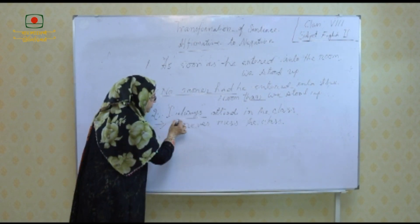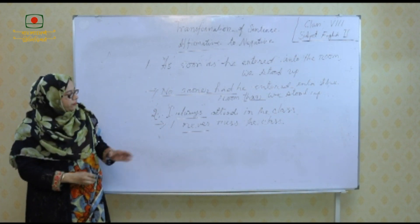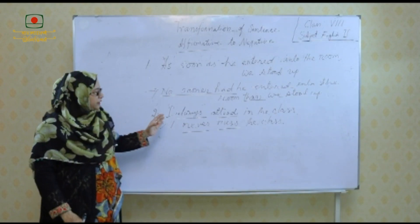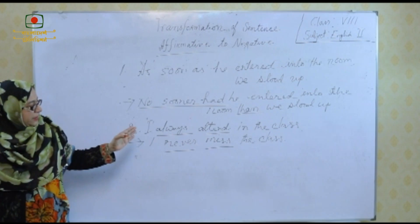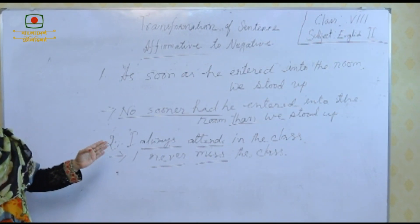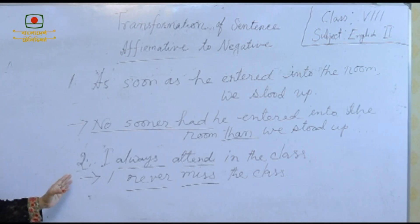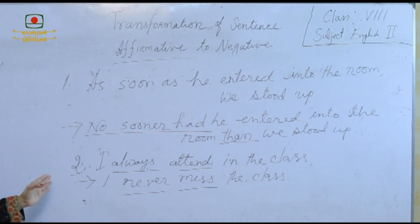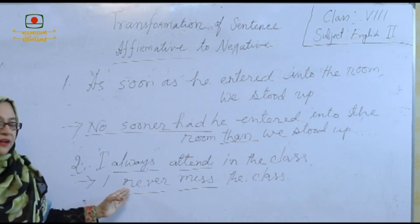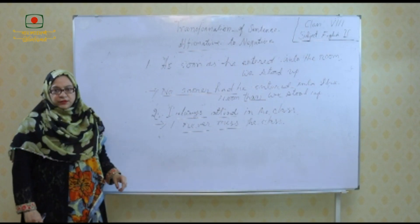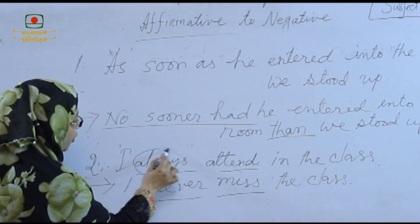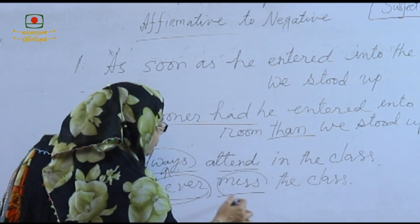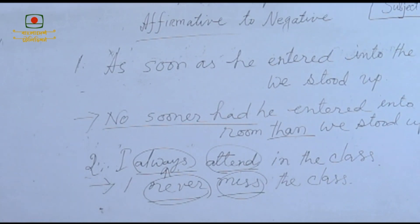We use 'never' instead of 'always' and the opposite word of the verb used in an affirmative sentence to turn it into a negative sentence. For example, 'I always attend the class' — the negative form is 'I never miss the class.' So 'never' is used instead of 'always' and 'miss' is used instead of 'attend'.